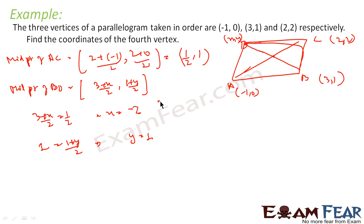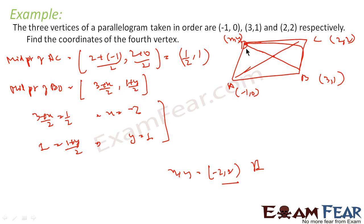So we got x = -2 and y = 1. That is the fourth vertex. Very easy way to solve this question. In a parallelogram, the midpoints of the diagonals always meet at one point, and we used this logic to solve the problem.